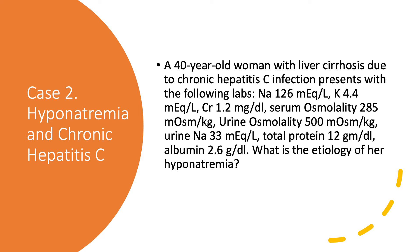Case number two: hyponatremia and chronic hepatitis C. Here we have a 40-year-old woman with a known history of liver cirrhosis secondary to chronic hepatitis C infection — this case is from before we had very effective treatment for hepatitis C. She presented with sodium 126, potassium 4.4, creatinine 1.2, serum osmolality 285, urine osmolality 500, urine sodium 33, total protein 12, albumin 2.6. What is the etiology of her hyponatremia?